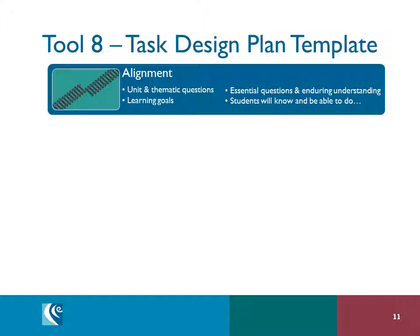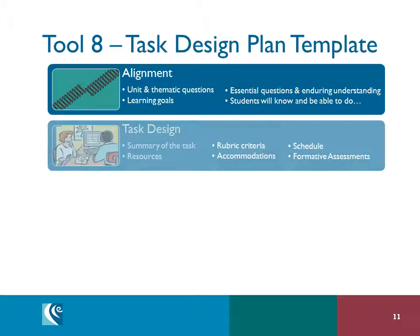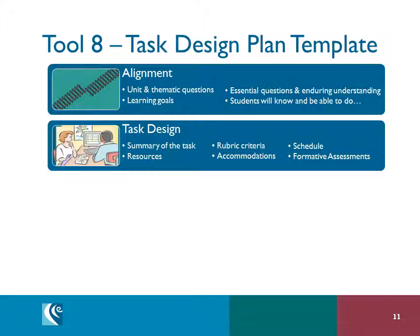In the first part of Tool 8, we unpack alignment. What do we want students to know and be able to do? What are the big picture questions that will guide their learning? Next, Tool 8 will take us through the elements of task design that we will then use to build student directions and the rubric.